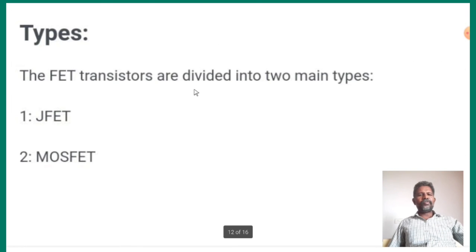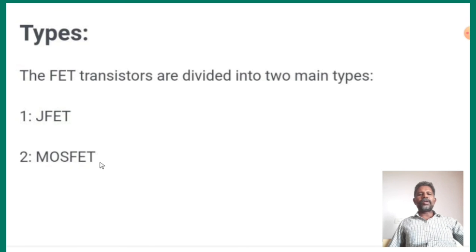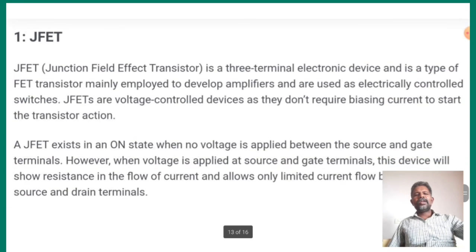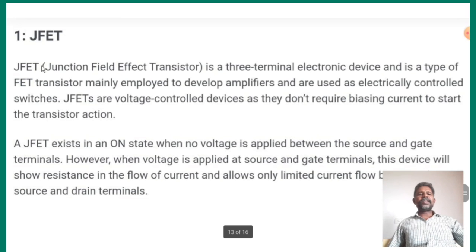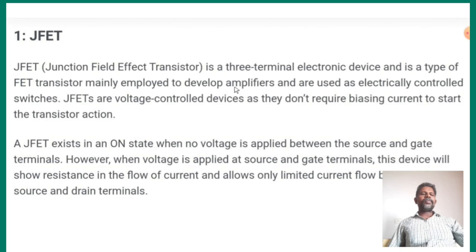Types of FETs: the transistors are divided into two types — junction field effect transistor JFET and MOSFET. These are the very important topics. The JFET, junction field effect transistor, is a three terminal electronic device and a type of FET transistor mainly used to develop amplifiers. Junction field effect transistors are used in amplifier development.